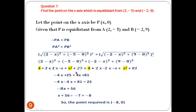On either side we have 4 with the same sign, so we cancel it. x² also appears on either side, so we cancel x² as well. We are left with -4x + 25 on the left side.